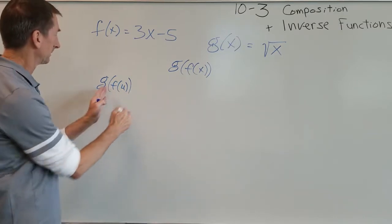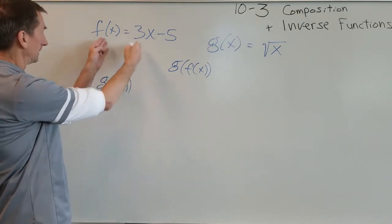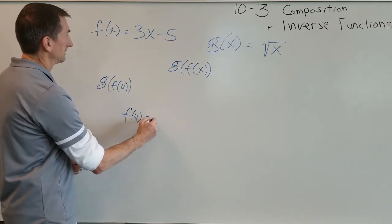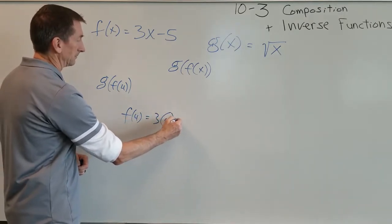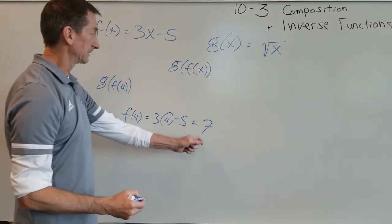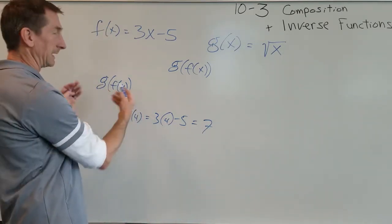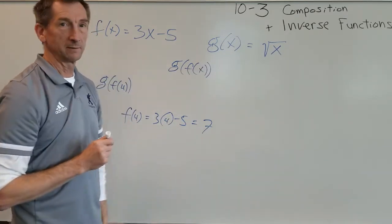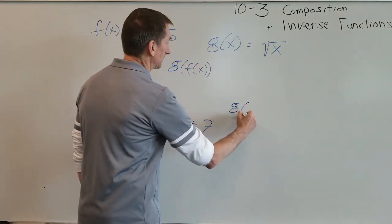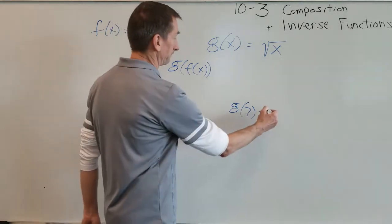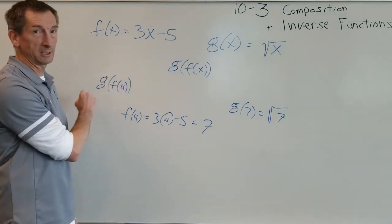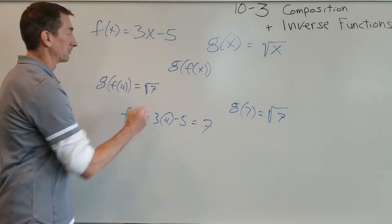Suppose I'm looking for g of f of 4. First thing, I'm going to work inside out. So I start here with f of x. Everywhere I see an x, replace it with a 4. So f of 4 equals 3 times 4 minus 5, which is 12 minus 5 is 7. I'm going to work to the outside and put that 7 into g of x. So everywhere I see an x, replace it with a 7. That gives me g of f of 7 equals square root 7. So g of f of 4 equals root 7.